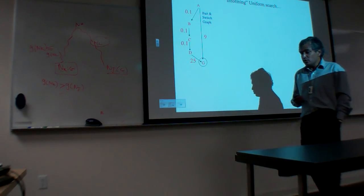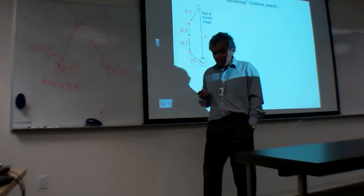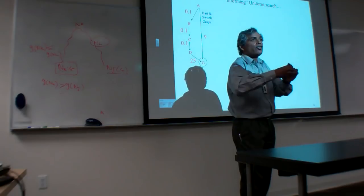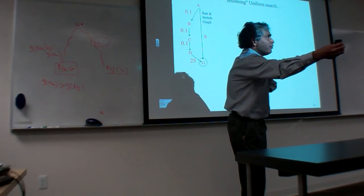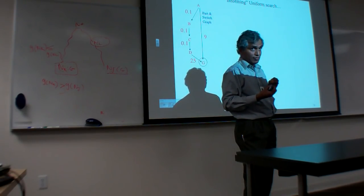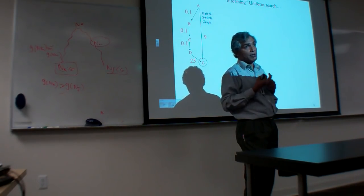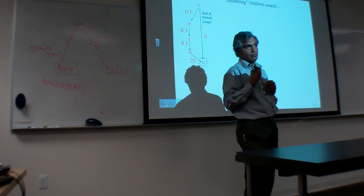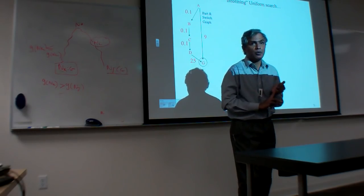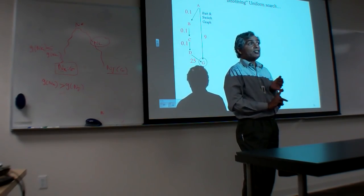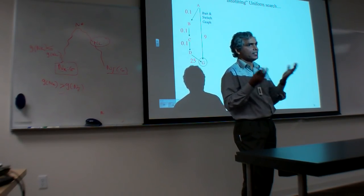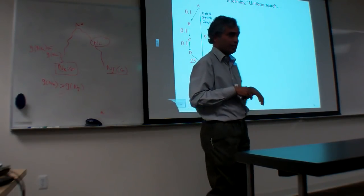Now we are going to start thinking about searches which not only care about how far they have traveled, but try to estimate how far they have left to travel. If they have such an estimate, the efficiency can be much better. The question is: A, where do you get those estimates, and B, what properties should those estimates have so that the search will still be optimal? That's the famous A* search. You're one slide away from A* search right now.